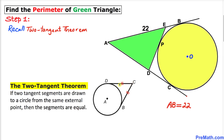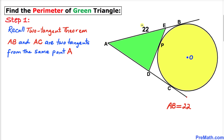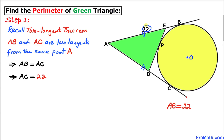We can see that CD and BC are two tangents drawn from external point C, so these two segments are equal in length. Similarly, AB and AC are two tangents drawn from the same external point A. According to the Two Tangent Theorem, AB and AC are equal in length, so since AB is 22, AC is 22 as well.